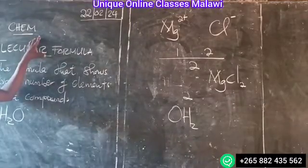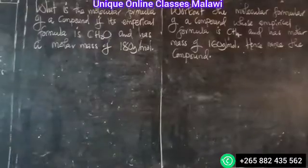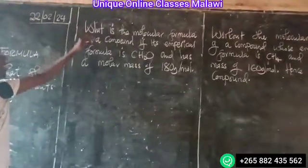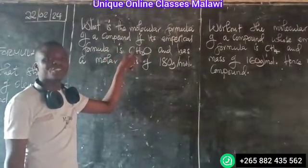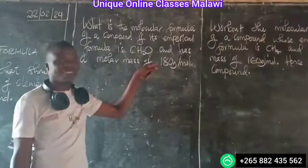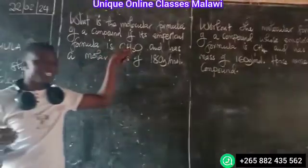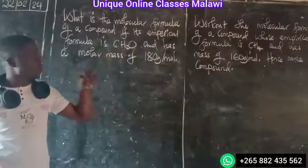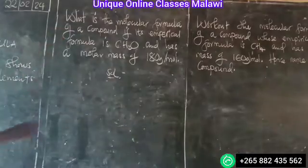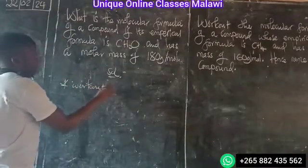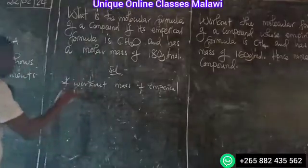What do you involve the empirical formula to determine the molecular formula? We have this question: what is the molecular formula of the compound if its empirical formula is CH2O and it has a given molecular mass? You want to determine the molecular formula of the compound. There are steps which we follow.